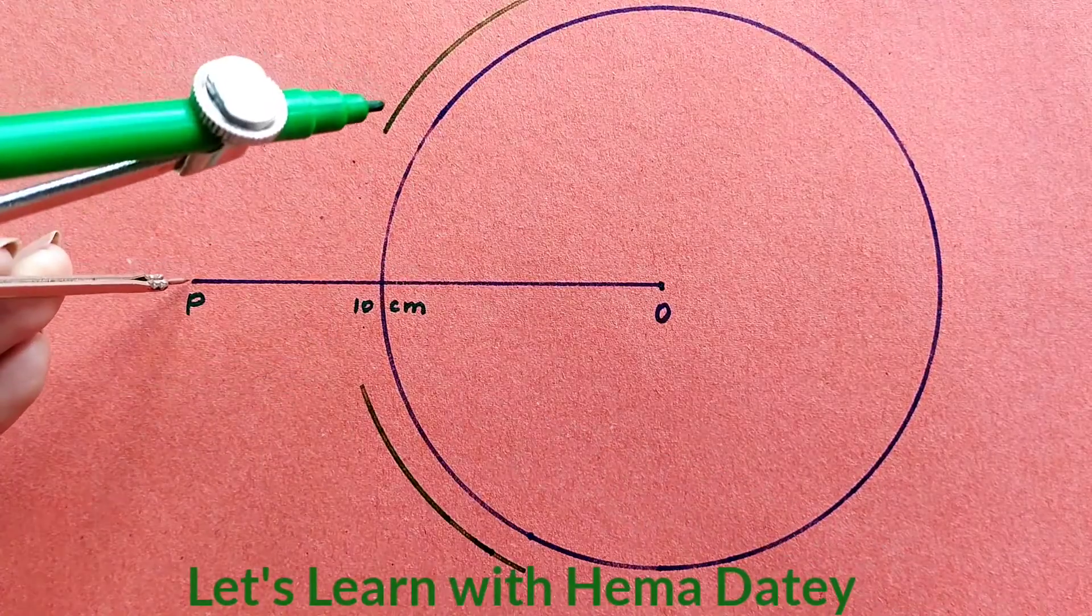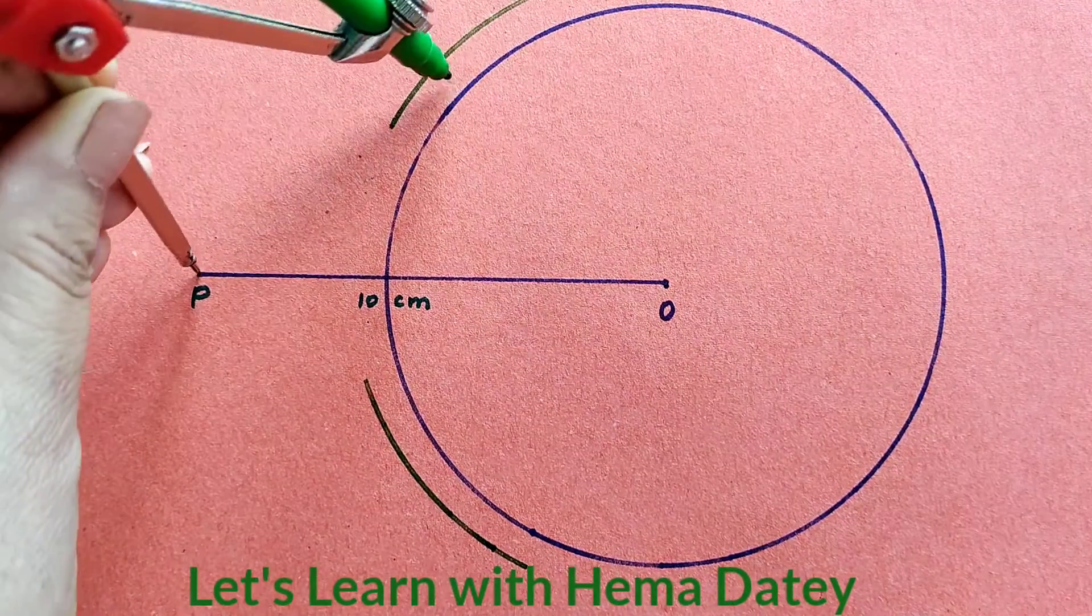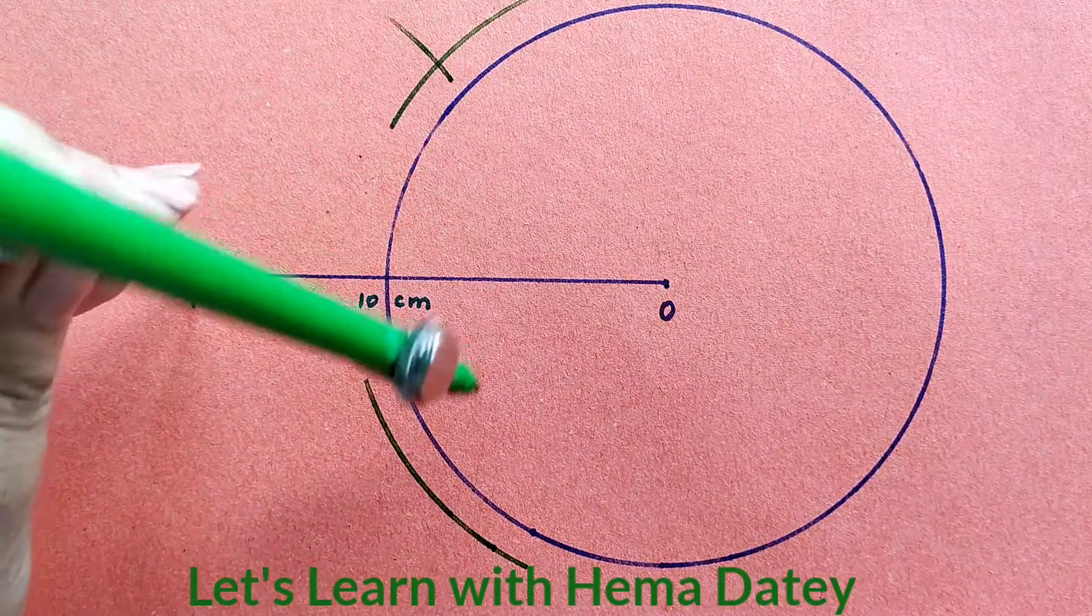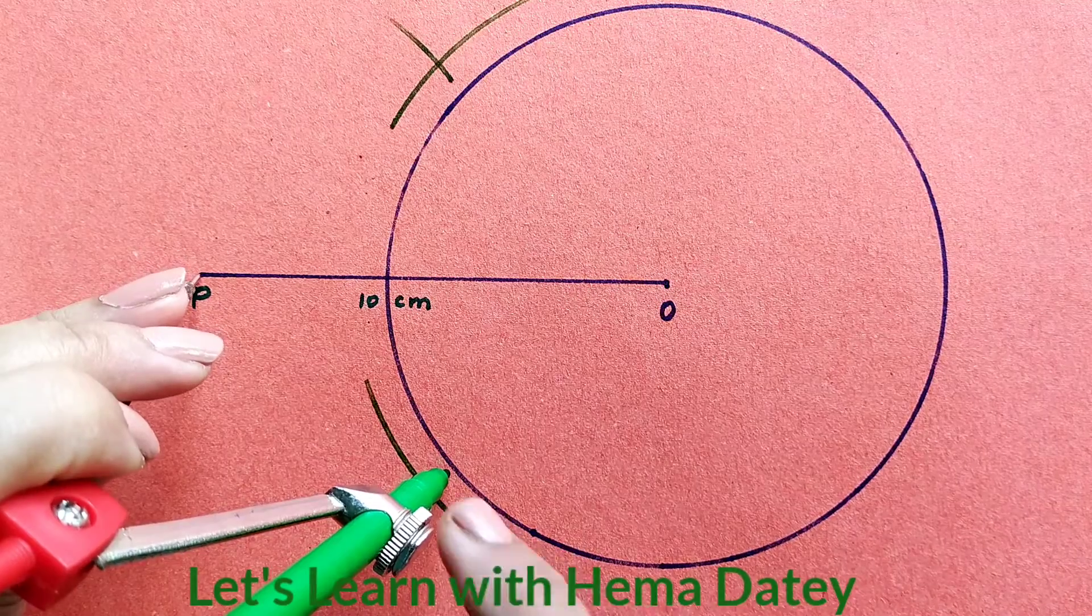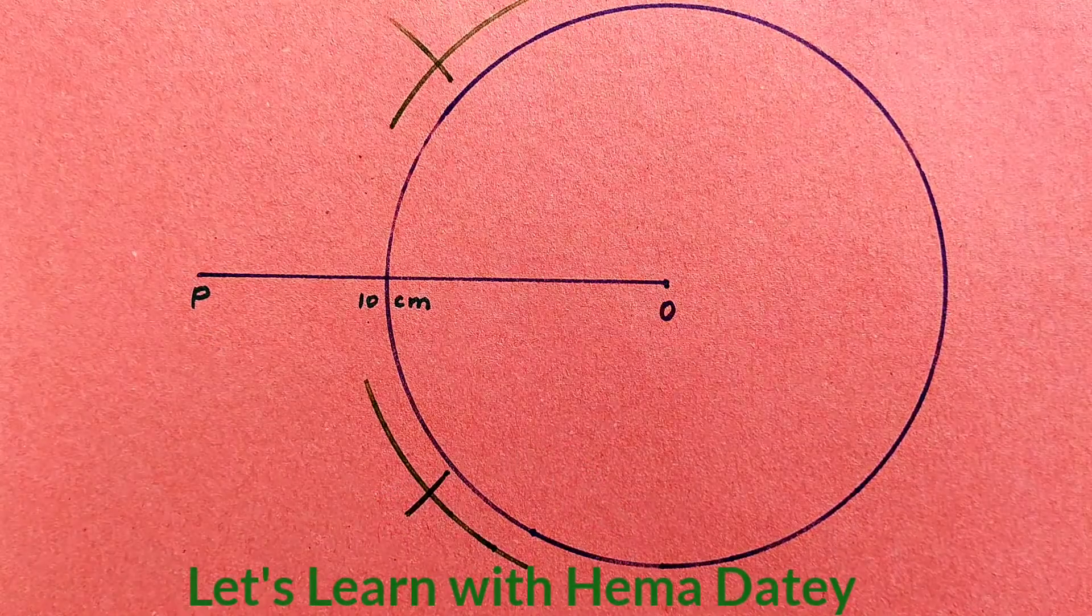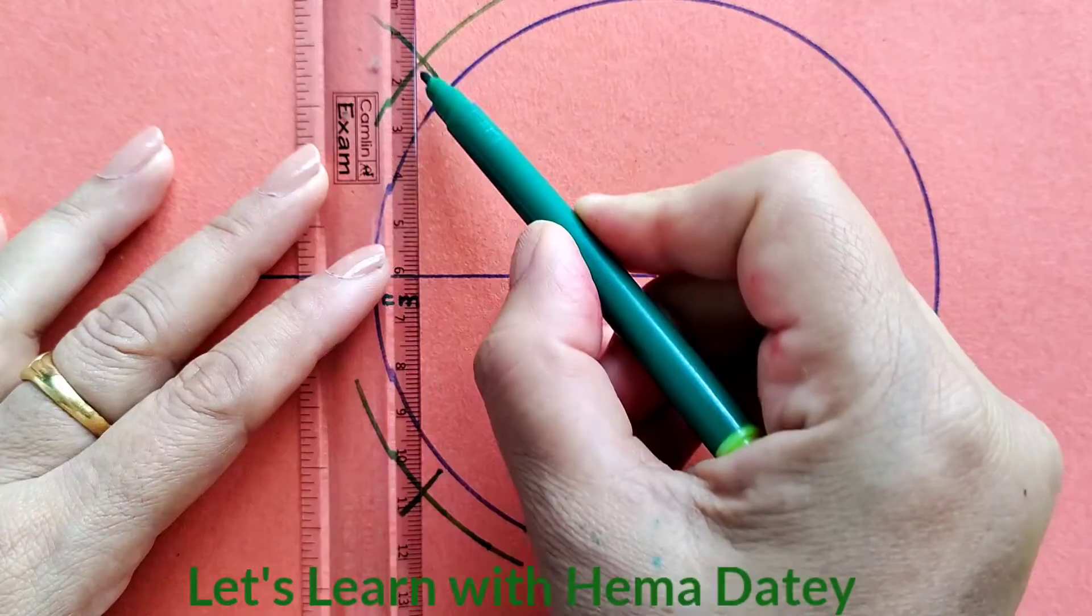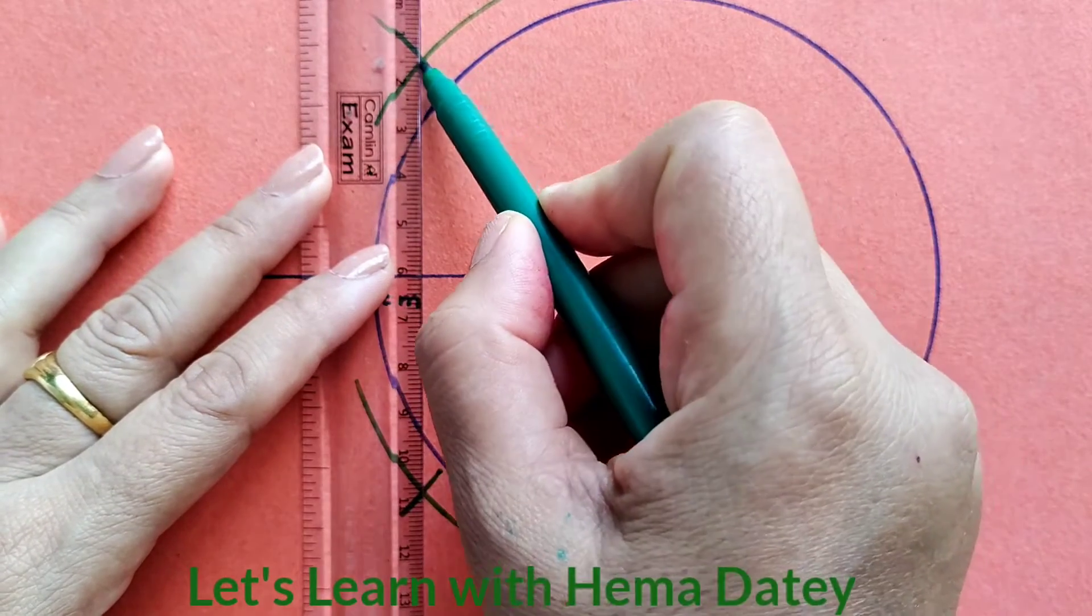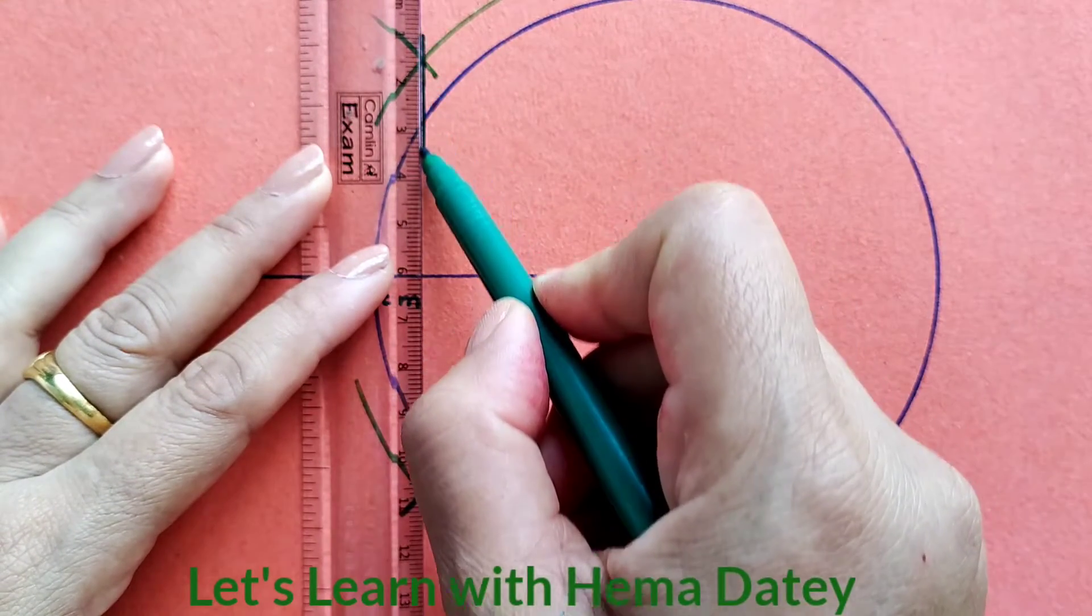We will repeat the process with center P. With center P and with same radius, we will cut the arcs drawn in the previous step. We will join these two arcs here. This is the perpendicular bisector of OP.